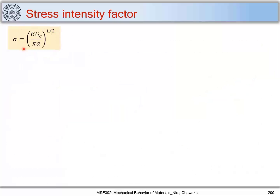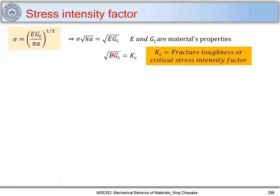Now, rearranging sigma = (E·G_C / pi·a)^(1/2), we can write sigma·√(pi·a) = √(E·G_C). Since E (Young's modulus) and G_C = 2·gamma_S + gamma_P are both material properties, we replace √(E·G_C) with K_C. This is called fracture toughness or critical stress intensity factor — K_C = √(E·G_C).